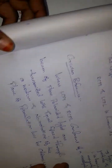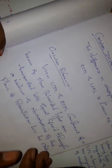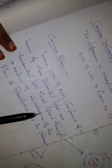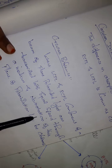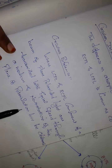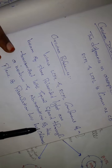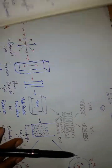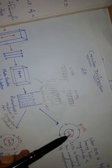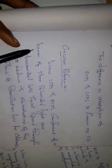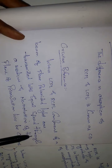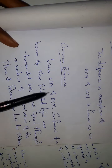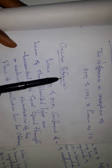Circular birefringence means when the RCPL and LCPL components of a beam of plane polarized light are transmitted with equal speed, with no rotation of the plane of polarized light observed. In circular dichroism there is a difference between RCPL and LCPL, but in circular birefringence there is no difference — they travel with equal speed. That process is known as circular birefringence.